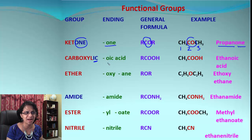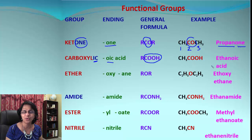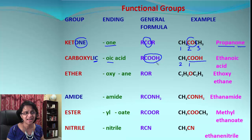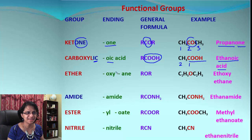Carboxylic acid always has '-oic acid' and the functional group is COOH. In this example, COOH is the carboxylic acid group and we need to count both carbon atoms — two stands for 'eth' — and we add '-oic acid,' so it becomes ethanoic acid.